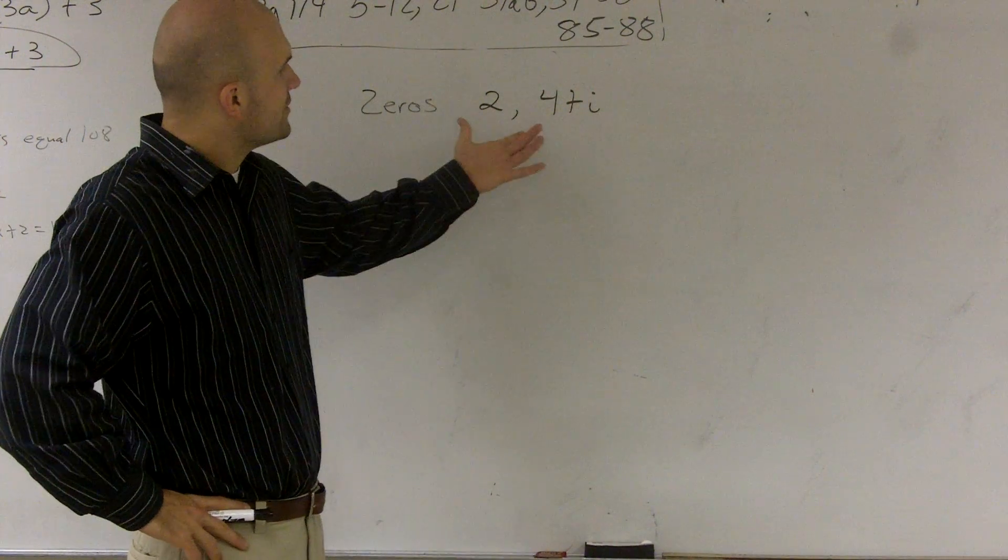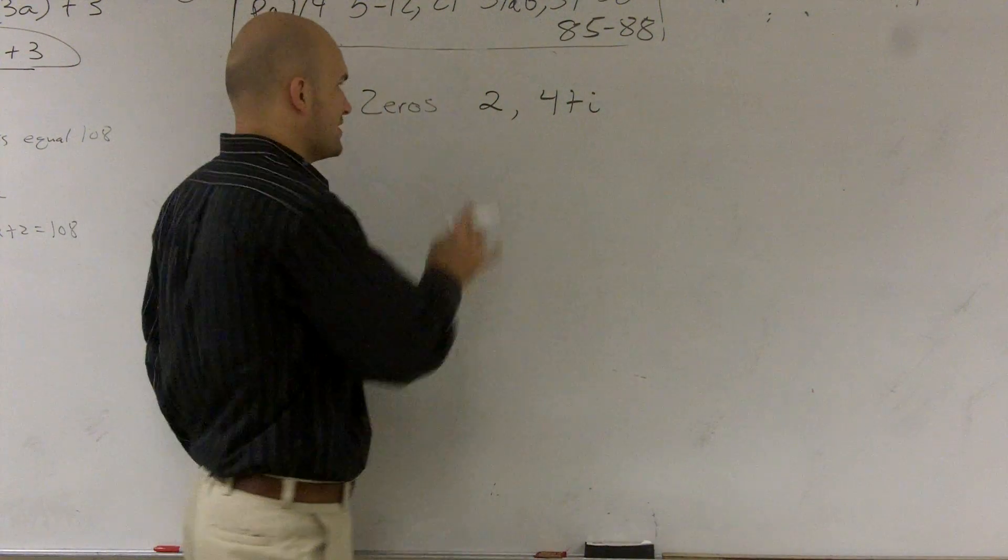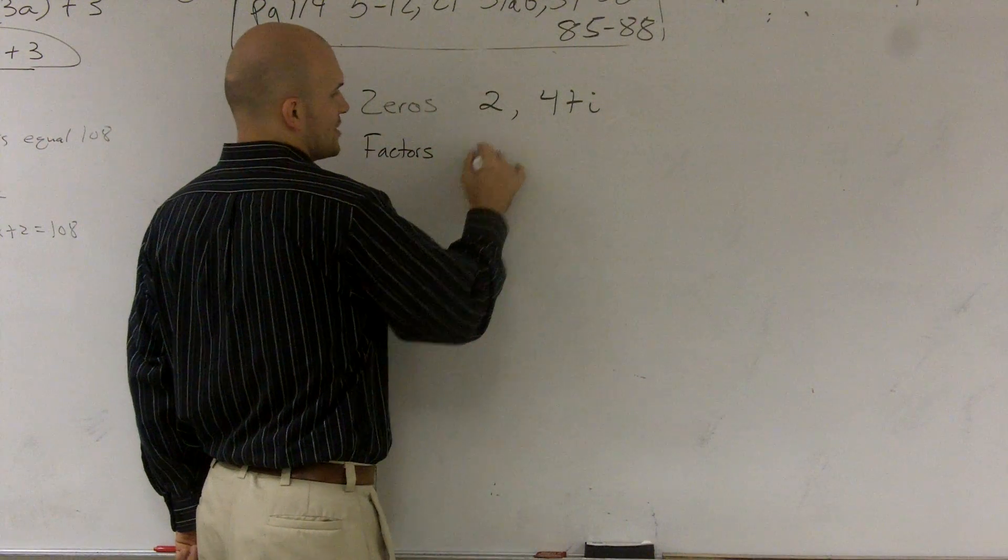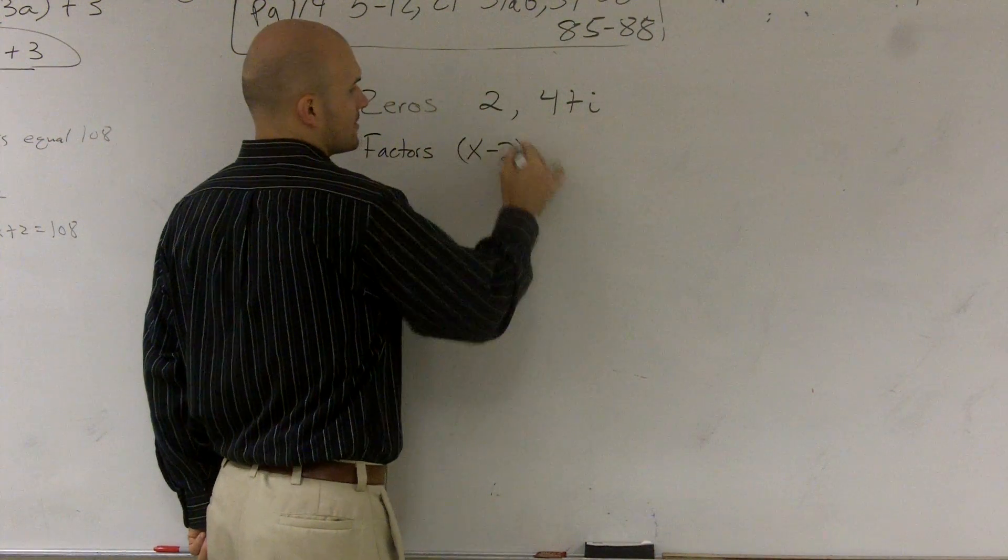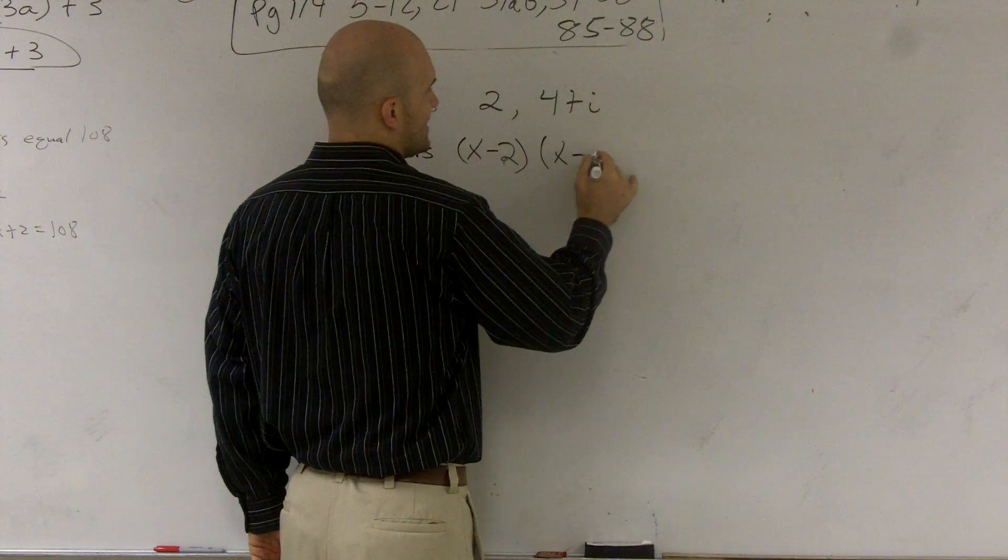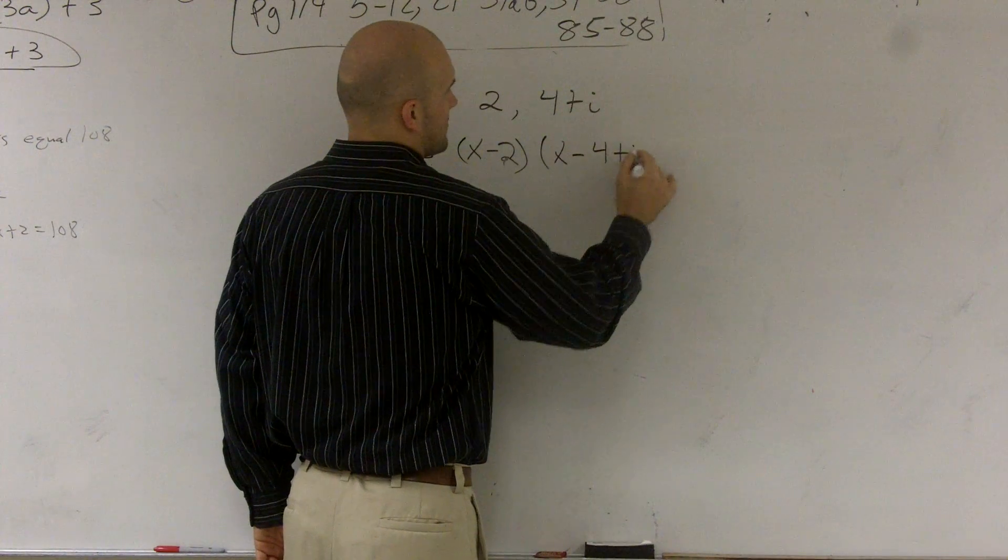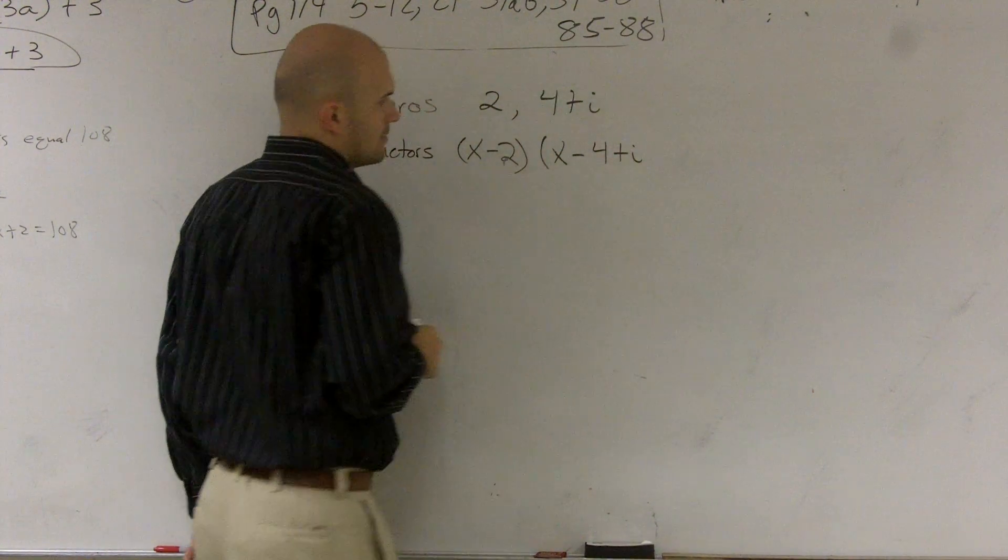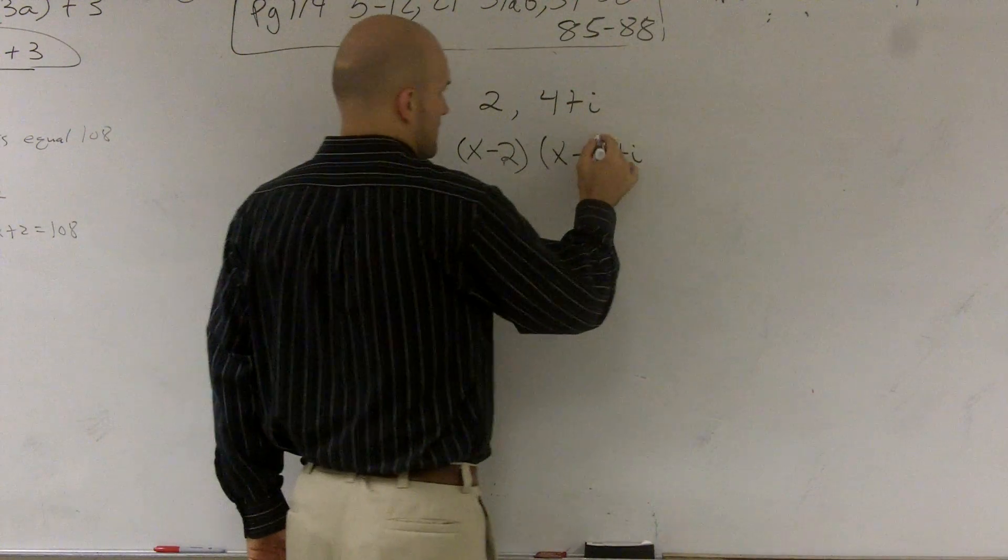So one thing I can do is write these as factors, right? When you write zeros to write as a polynomial, it's best to write what the factors are. So this would be x-2, and this would be x-(4+i).